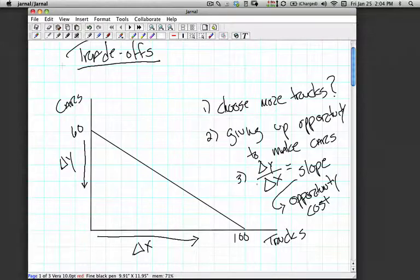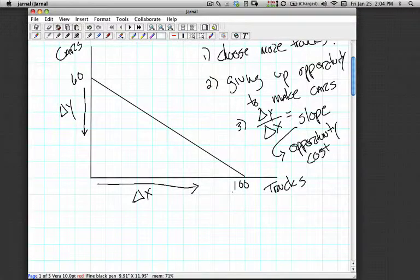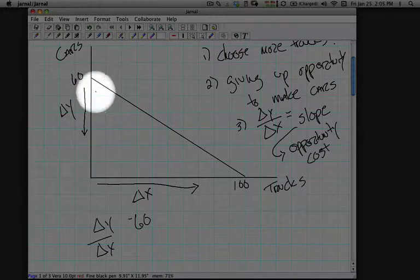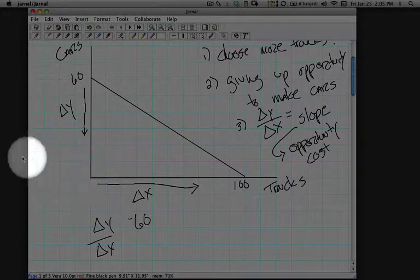Okay, so in this case, if we look at this particular production possibility frontier, we can see that if in fact across the whole line, the firm chose to go from making all cars and no trucks to all trucks and no cars, they would have to decrease their production of cars by 60.